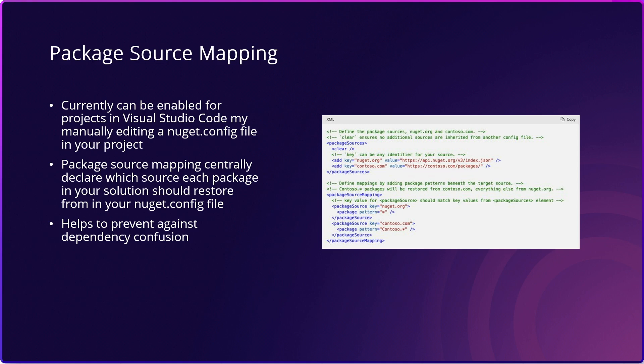An example provided here shows you how package source mapping works in your NuGet.config file, which is found in the root of your repository. It details a package and maps it to an exact source so that you have confidence that you're getting the exact package you're looking for every time, and not installing malware that can compromise your security. To learn about how to onboard your solutions to package source mapping, be sure to check out the links in the description.